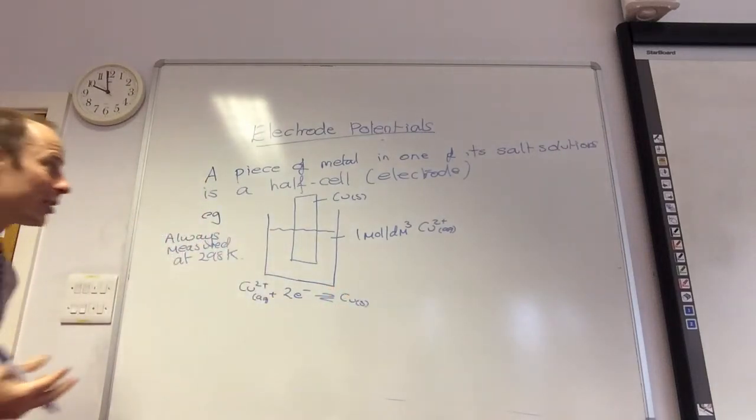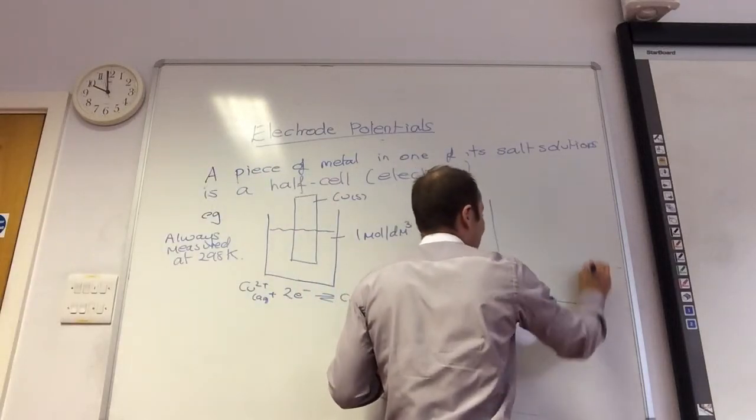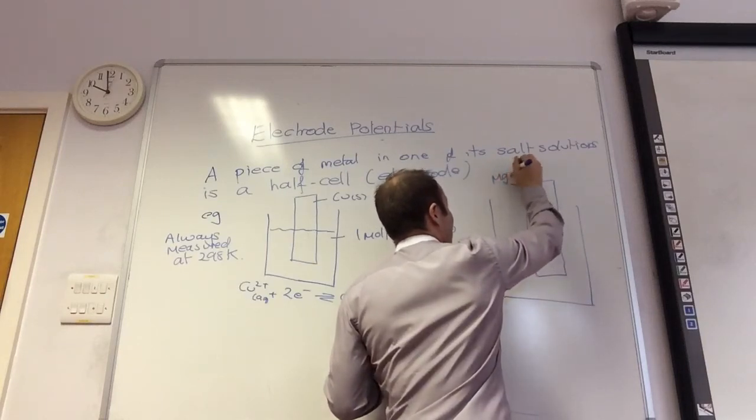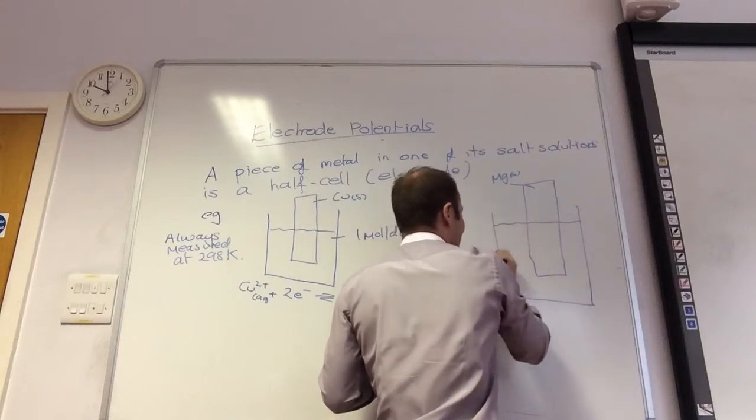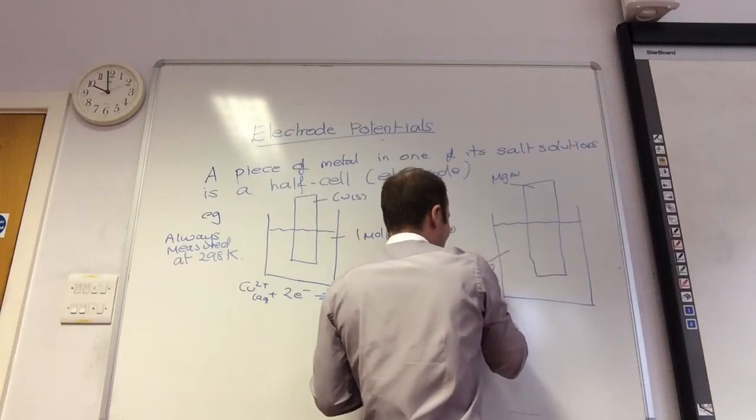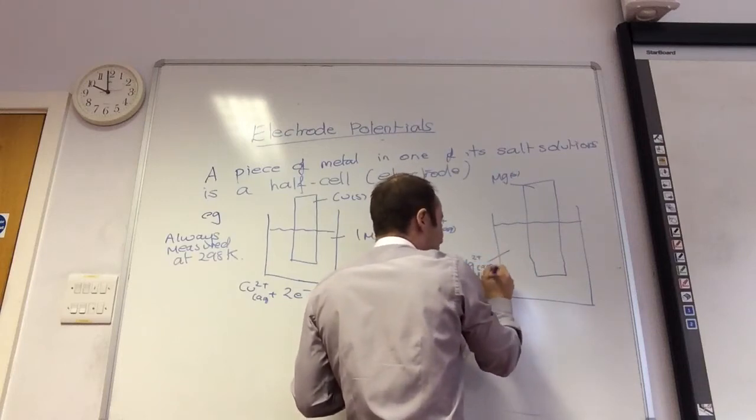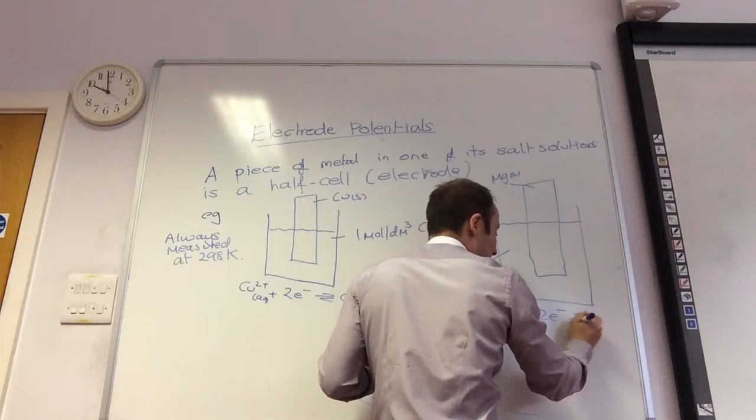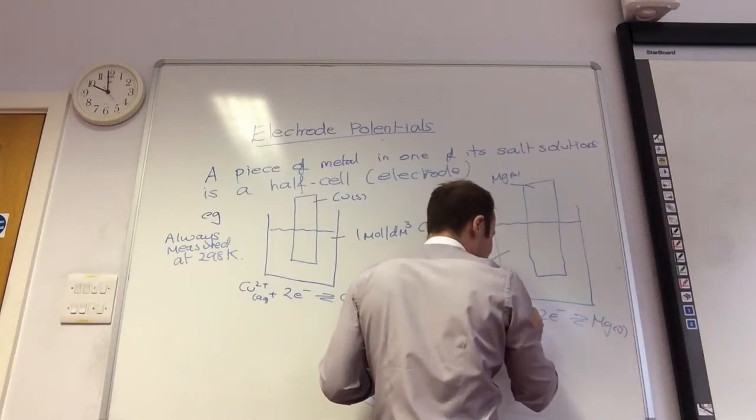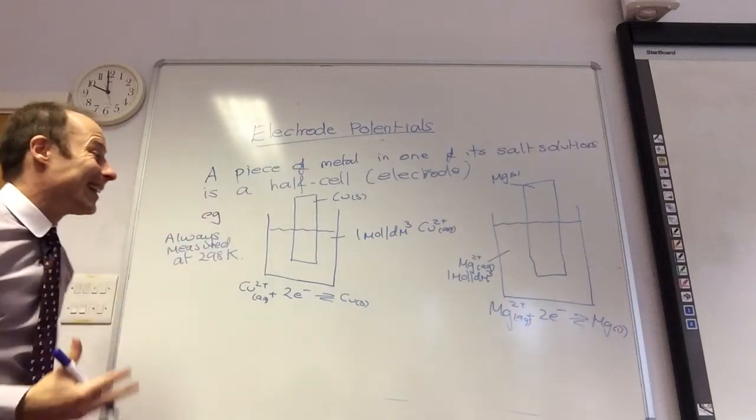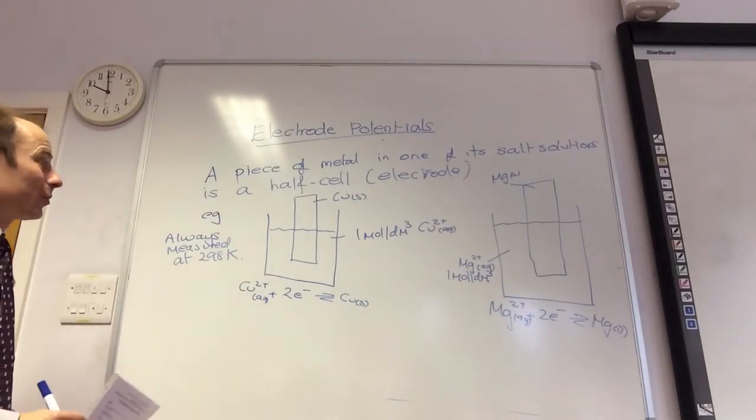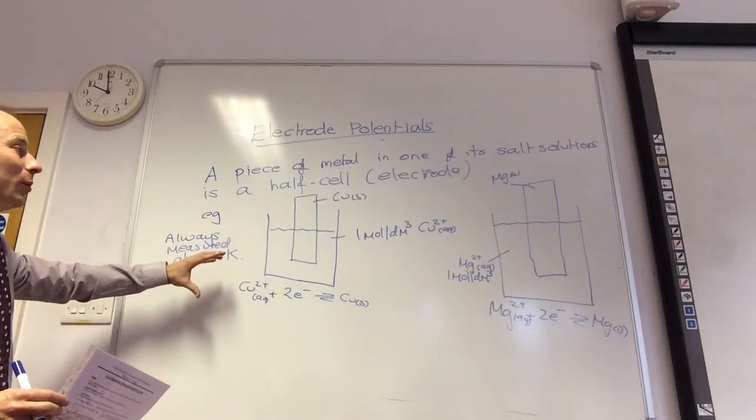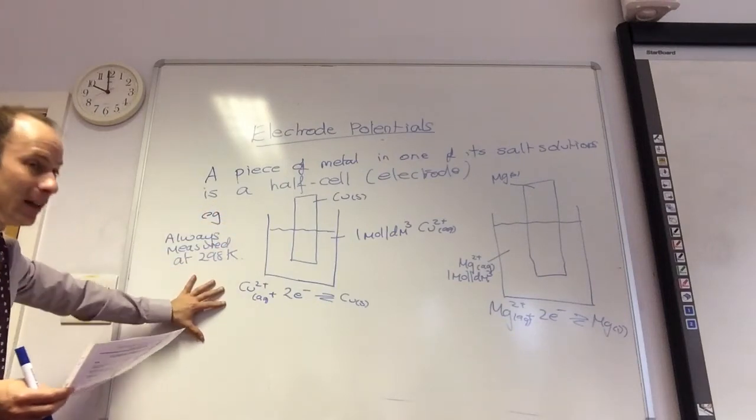So let's do another one. We could also have magnesium, a bit of magnesium solid. This time, I'm going to put them in Mg two plus aqueous. Again, one mole. It's really good to just get used to always writing one mole per decimeter cube. And as we've said, we always write the most oxidized on the left hand side. We are always going to add electrons to something. It's always got to be adding electrons. So it's very easy to do this for a metal. You take the solid metal and you stick it in a solution.